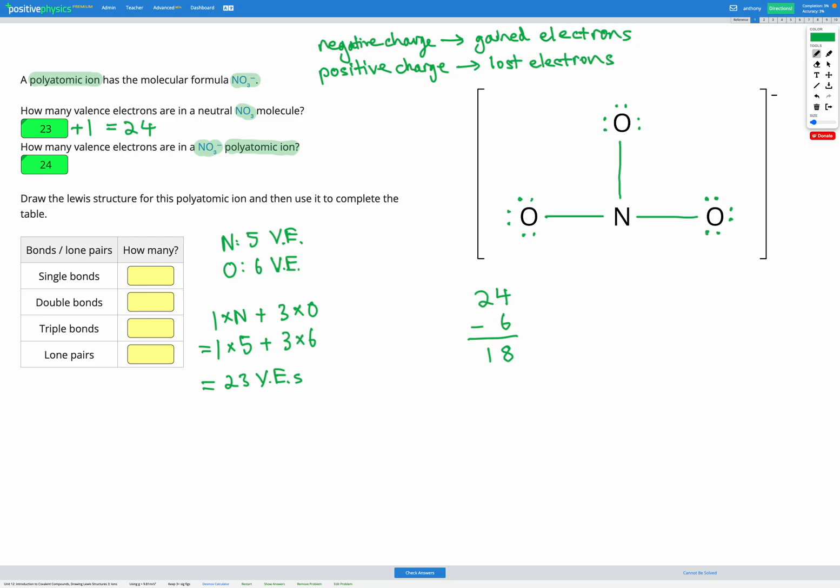So we've just added 6 electrons on each of our oxygen atoms. We've added a total of 18 electrons. So we've used up 18 electrons, leaving us with 0. So we've now used up all of our electrons.